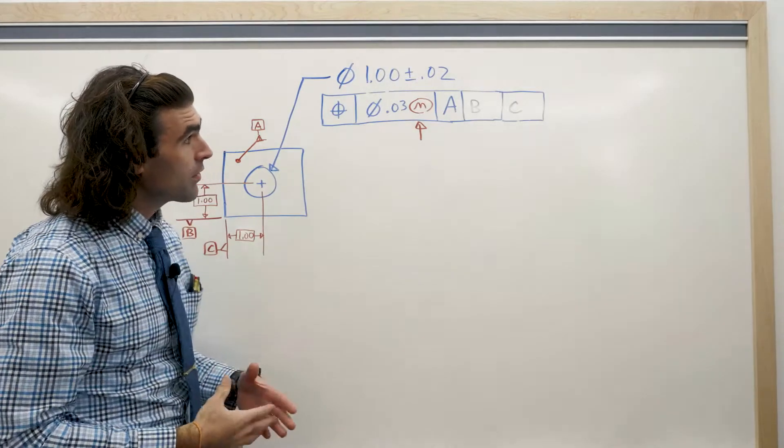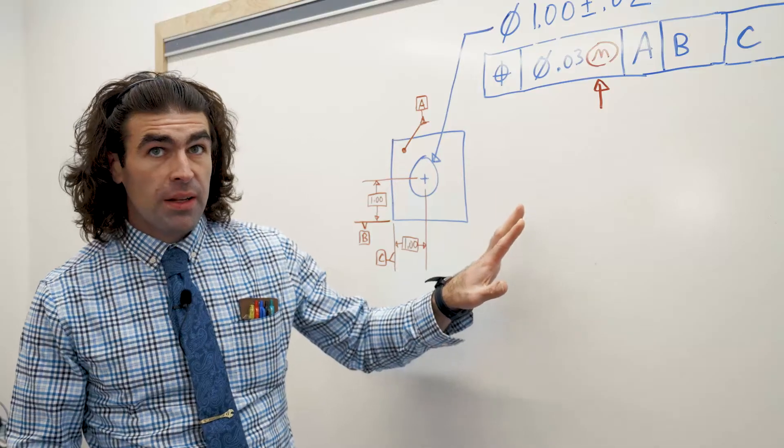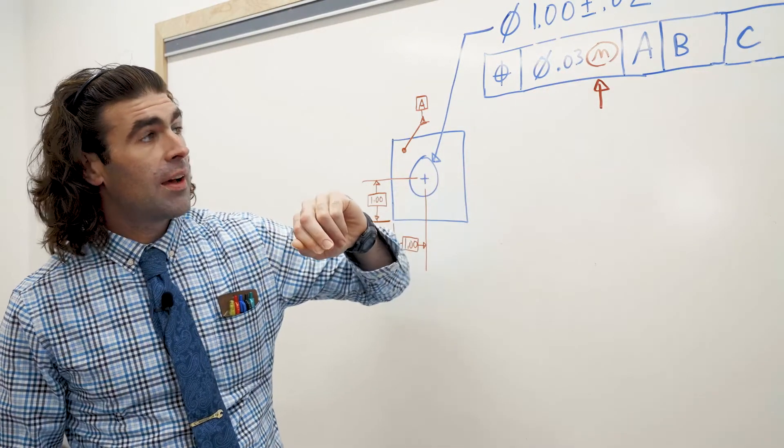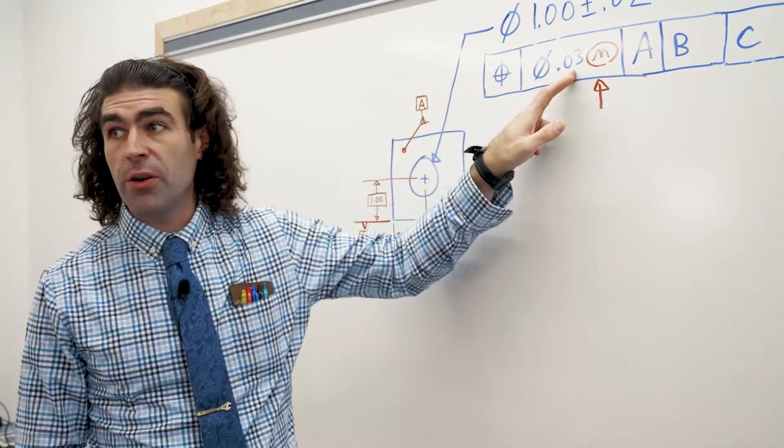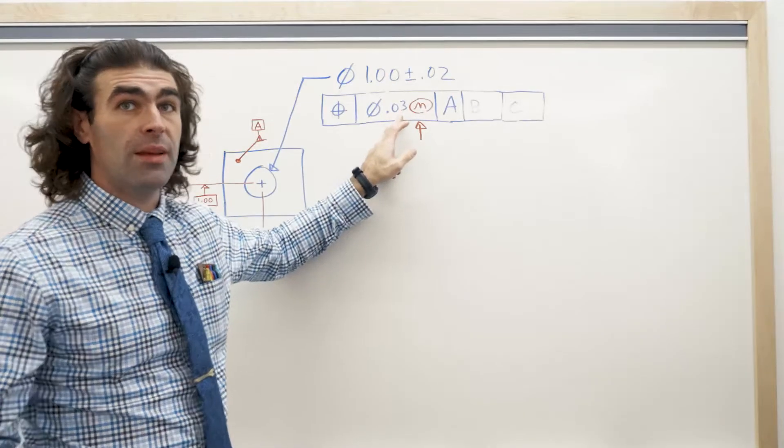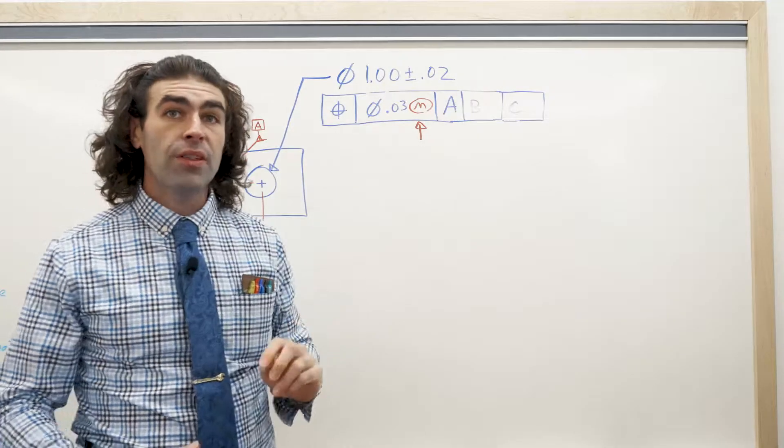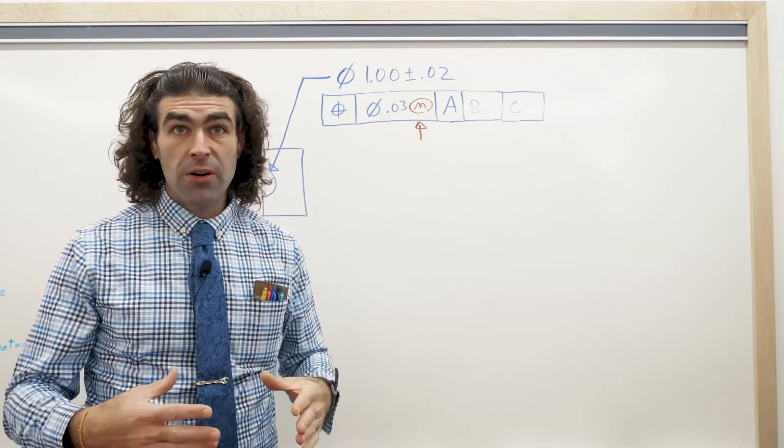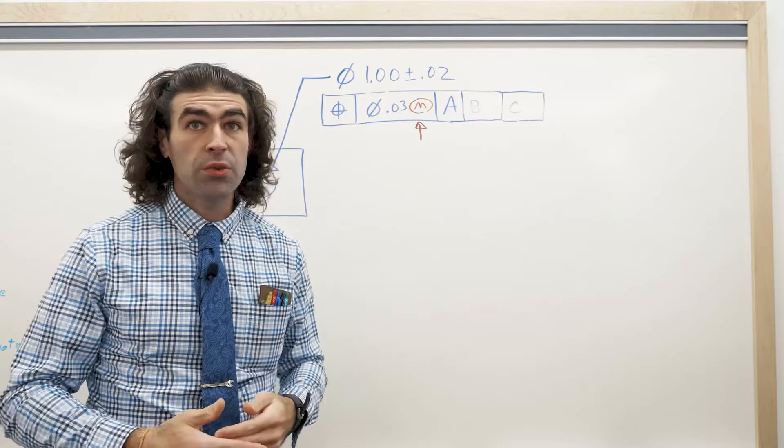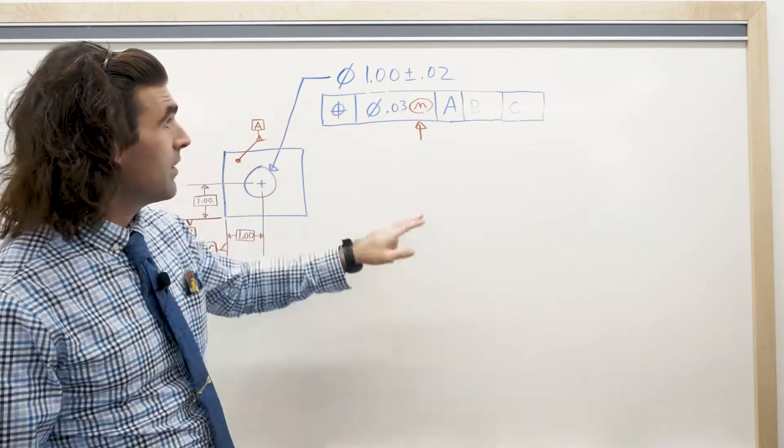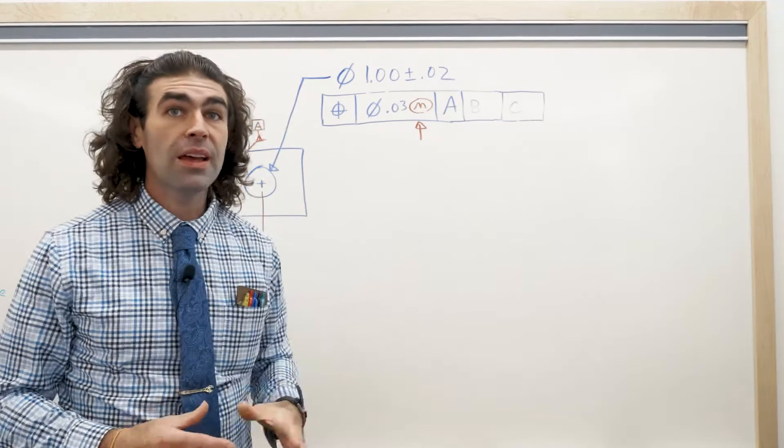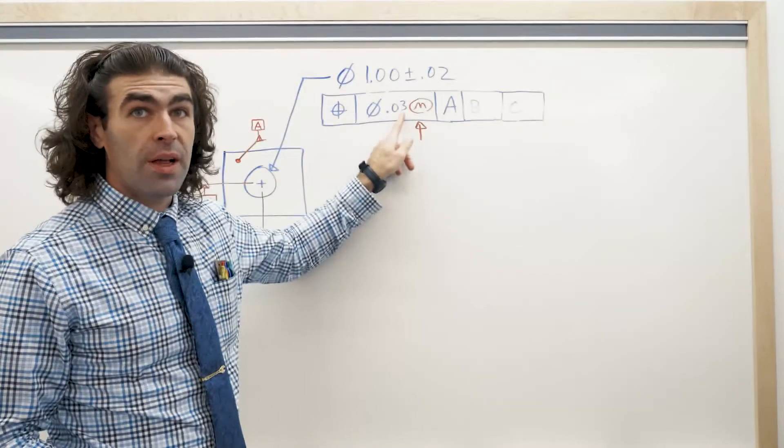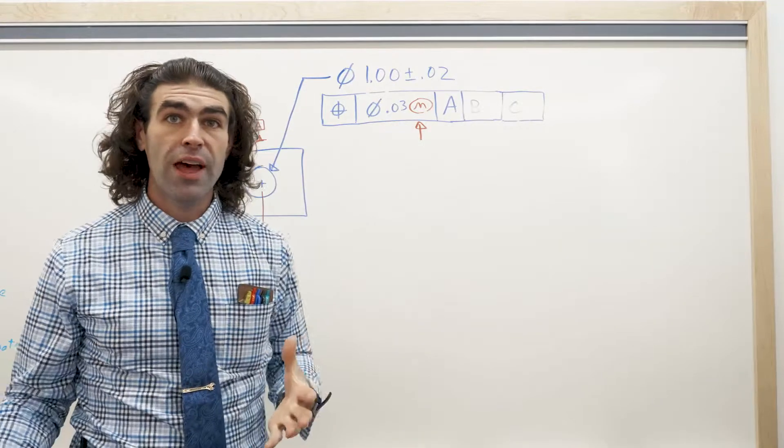Now, how this works, how I read it, is that if I see the MMC symbol, I automatically think this tolerance only applies at MMC. If the feature comes in anywhere not MMC, so it's heading toward its LMC, in this case, the smallest hole is MMC. If the hole comes any bigger than that, this no longer applies. It can be a larger value.